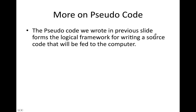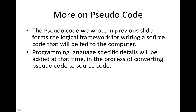The pseudocode we wrote provides the logical framework for writing source code that will be fed to the computer. Programming-language-specific details will be added when you convert pseudocode to source code. As I mentioned, if you read chapter one of my ebook posted on D2L in the content area, it clearly illustrates how for the CoinStar machine example we do the flowchart, then the pseudocode, and exactly how we convert that pseudocode into Java source code, run the program, and get the results.